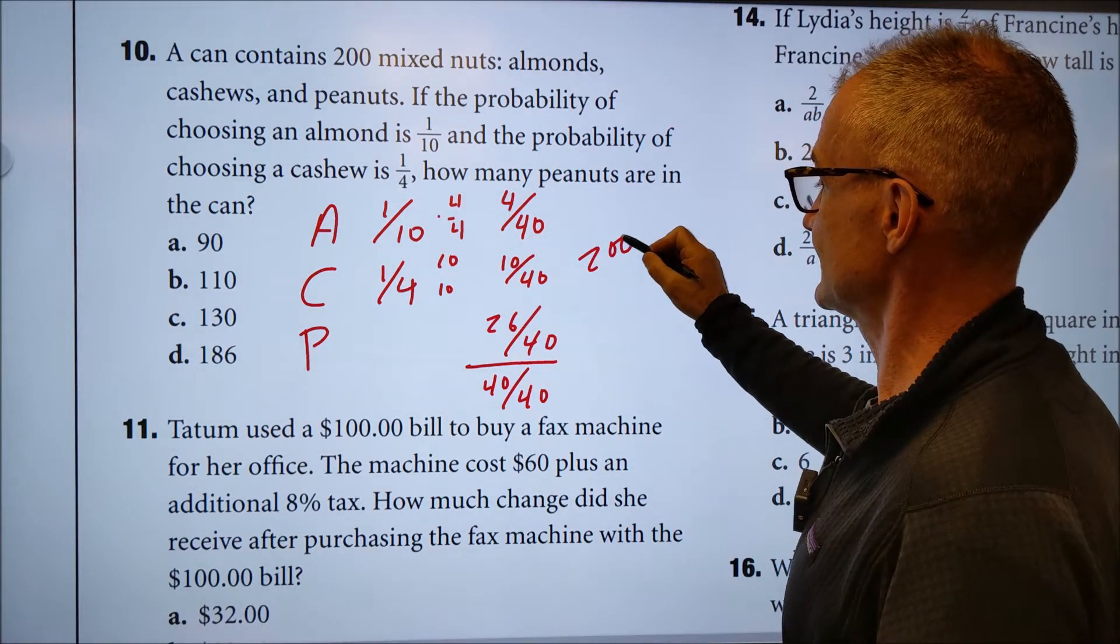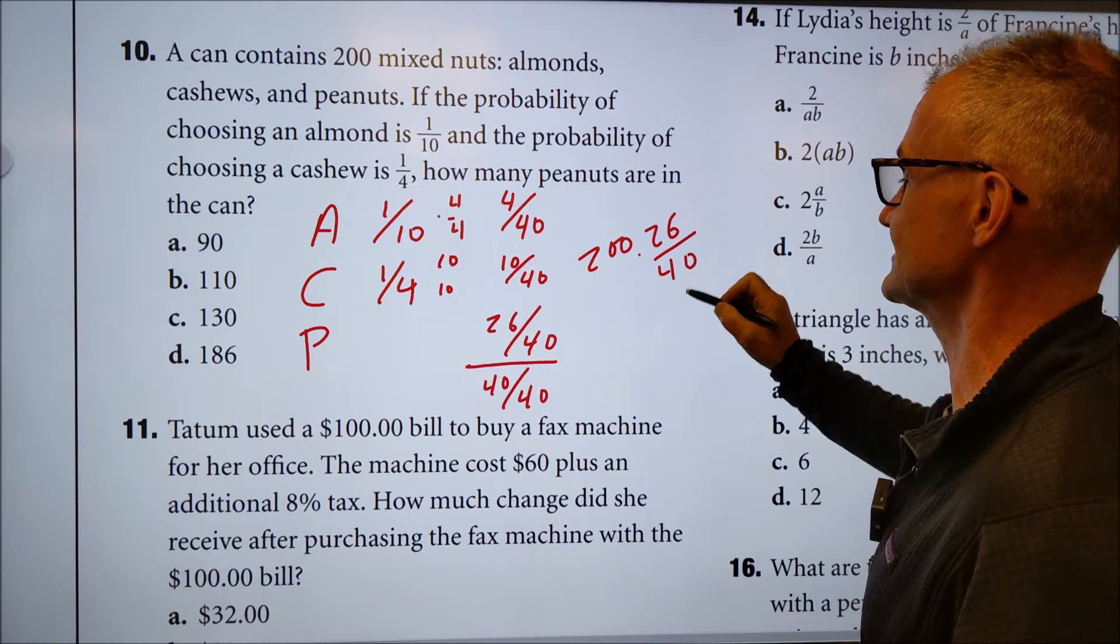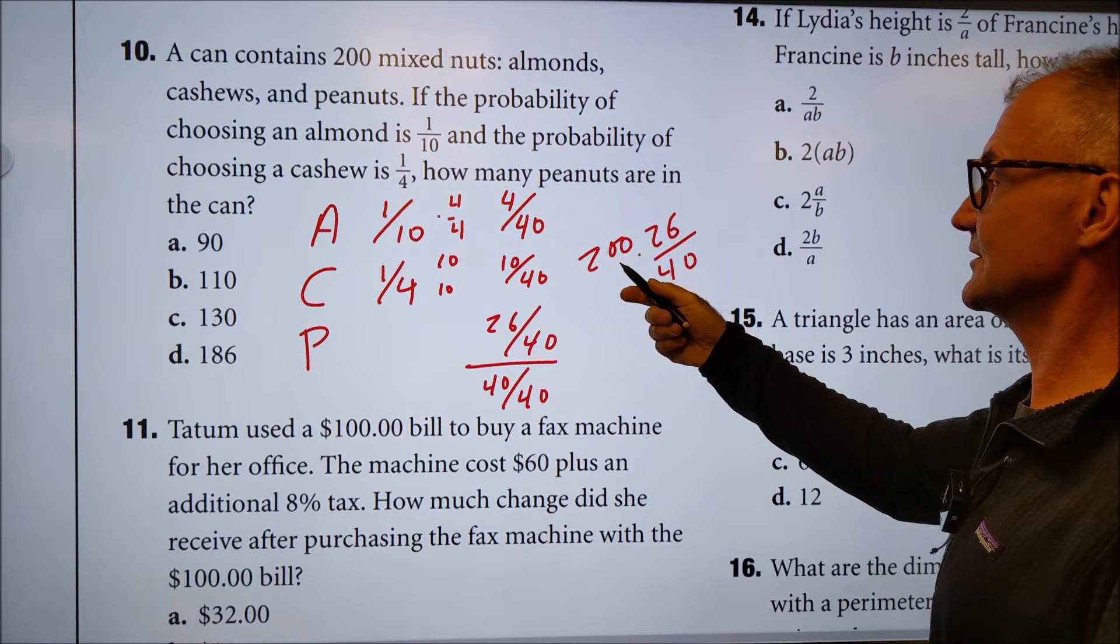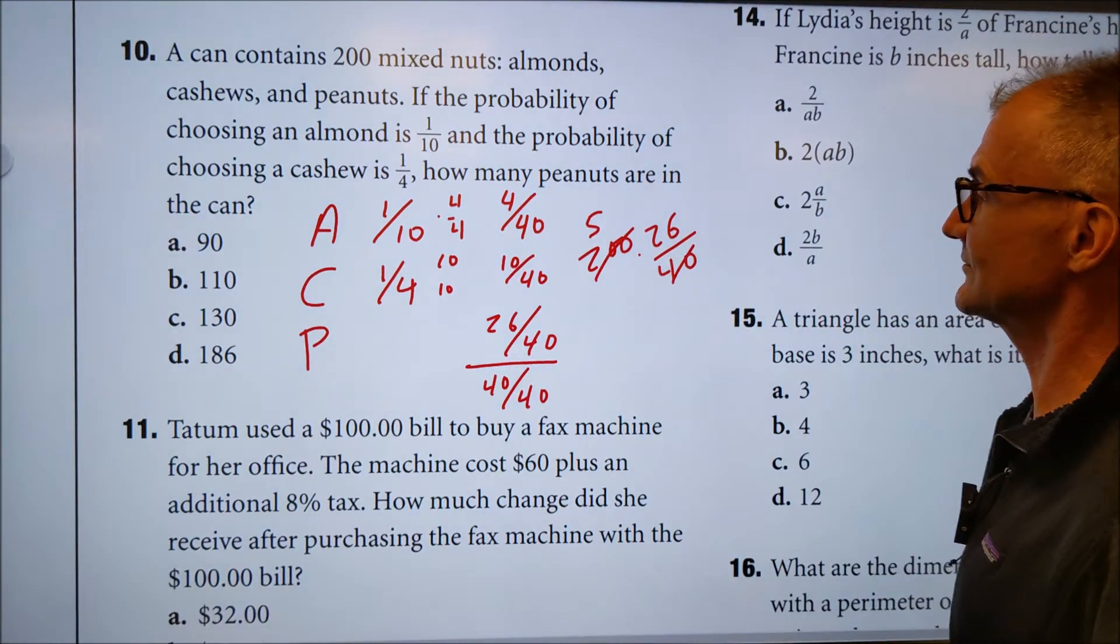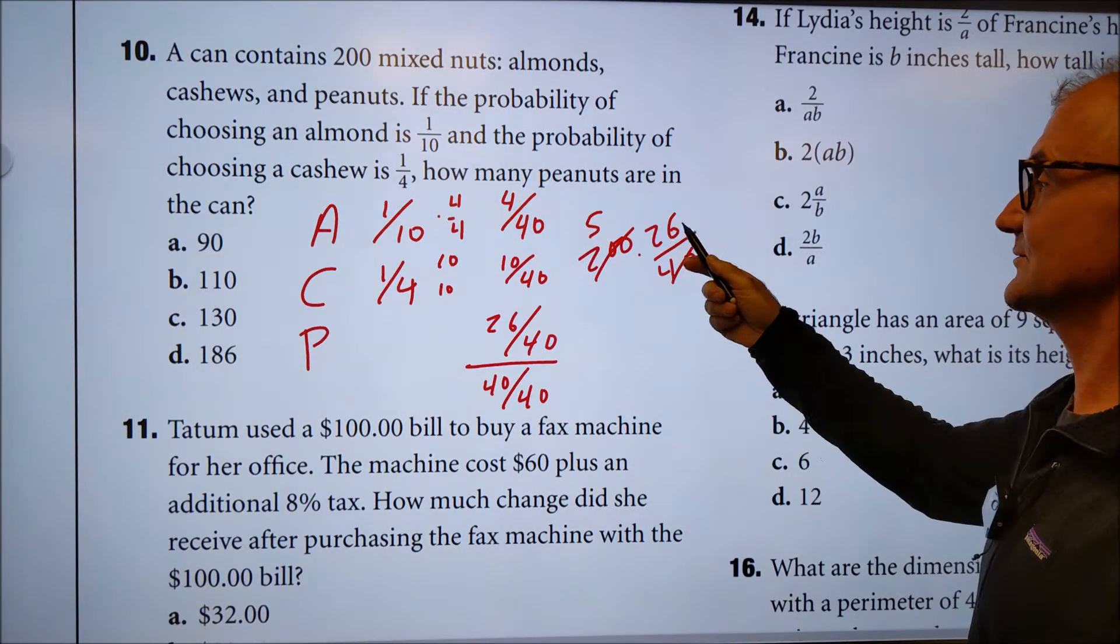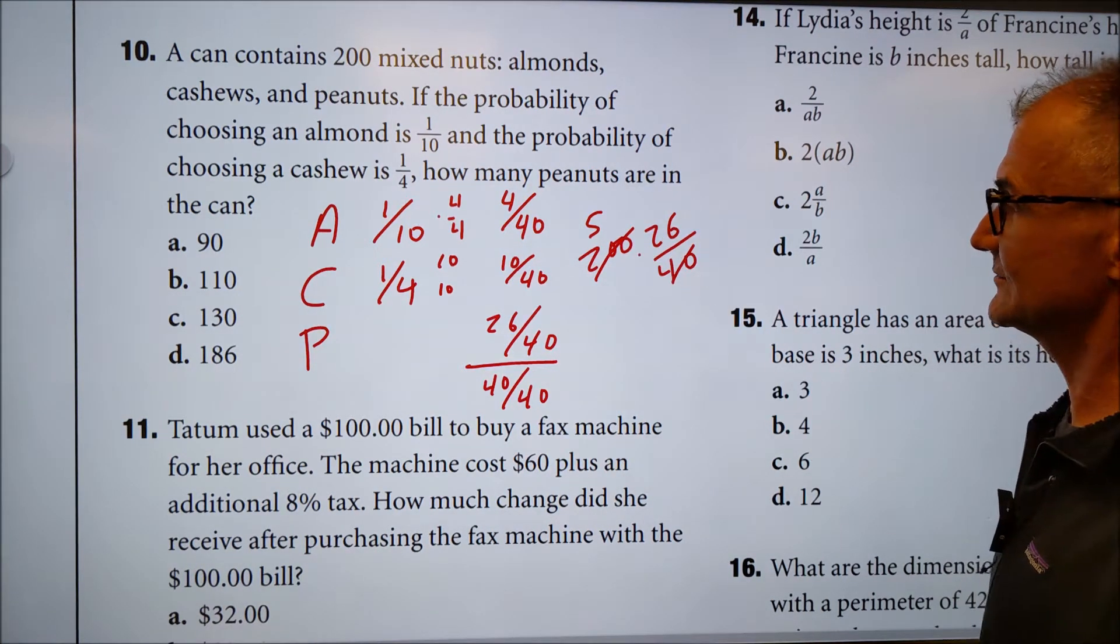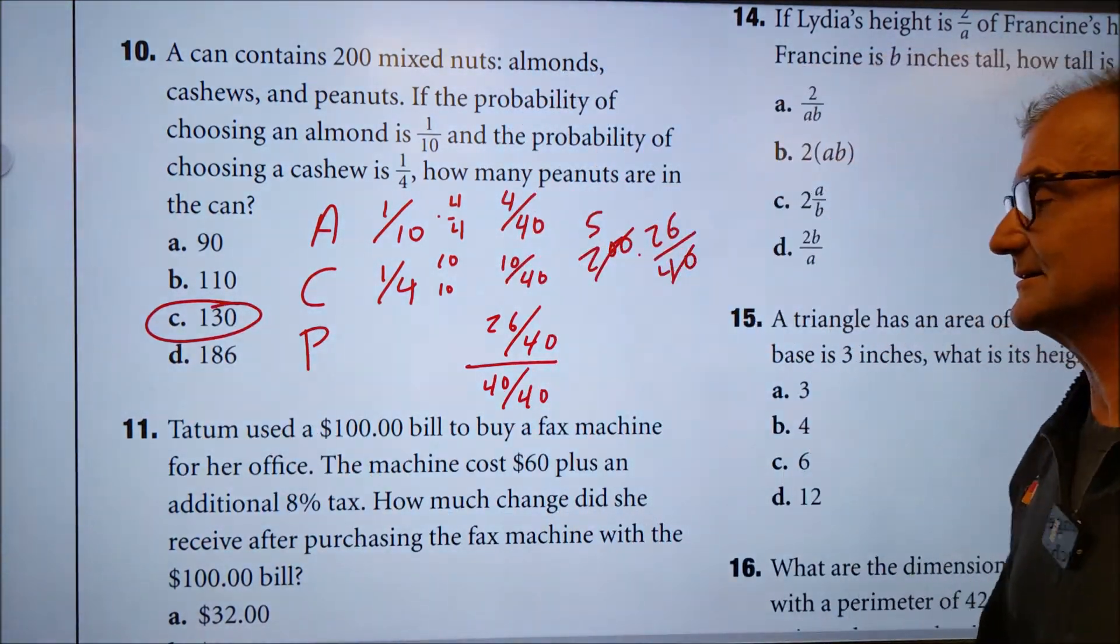So I'm going to take that 200 multiplied by that fraction. It's 26 over 40. I could reduce it, but I don't have to. 40 goes into 200 five times. So it goes in there five times into itself one. So I have five times 26, five times 20 is a hundred, five times six is 30. So the answer is 130. It's a pretty hard problem. There's my answer right there.